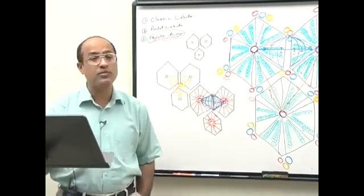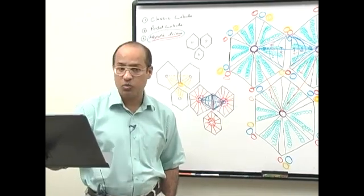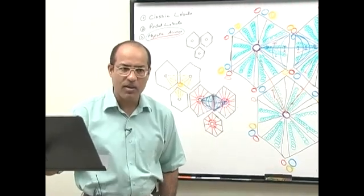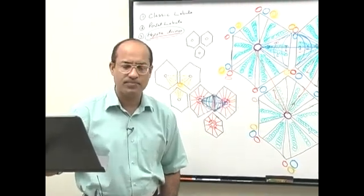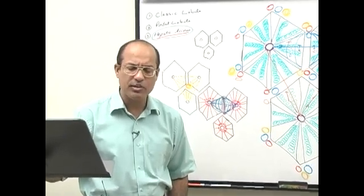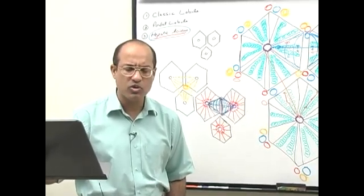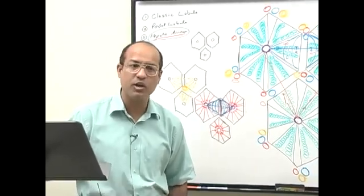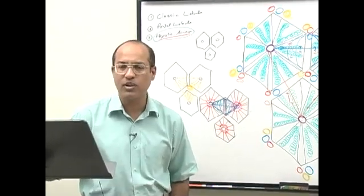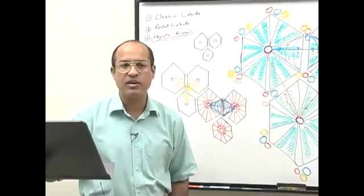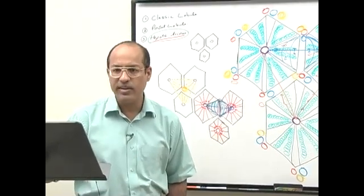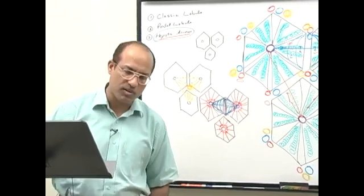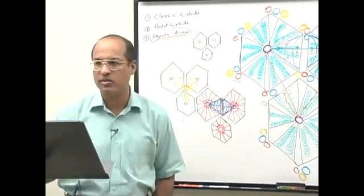The liver has metabolic functions like converting glucose into glycogen when blood glucose level is high and insulin level is high. When blood glucose level goes down between meals, hepatocytes break down glycogen back into glucose. So one function of the liver is stabilizing blood glucose level — when glucose is high it converts glucose to glycogen, and when glucose is low it breaks glycogen back to glucose and releases it into the blood.